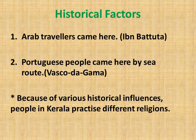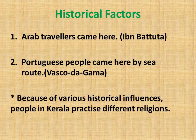Regarding historical factors of Kerala: Arab travelers came here, and the famous one among them was Ibn Battuta, who wrote different travelogues — meaning the explanation of journeys he made in his life. Portuguese people also came here by sea route; the first Portuguese who came to India was Vasco da Gama. Because of all these historical influences, people in Kerala practice different religions like Islam, Christianity, Hinduism, and Buddhism. This shows that historical factors also influence the people living in a particular region.